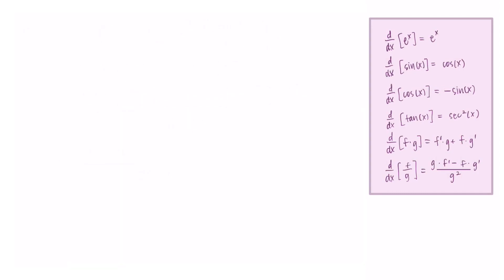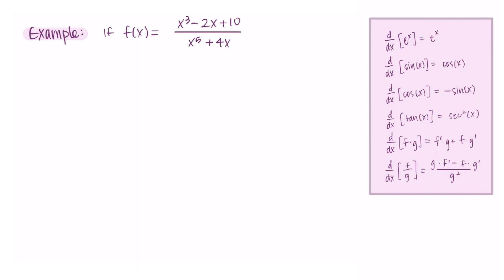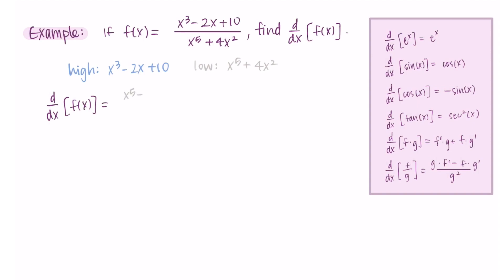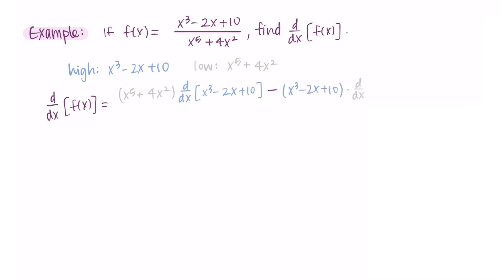I want to do an example that's a little more messy — polynomials in a rational function. Let's say f(x) = (x³ − 2x + 10) / (x⁵ + 4x²), and we want to find the derivative of f. The high function is x³ − 2x + 10 and the low function is x⁵ + 4x². Putting these into the quotient rule formula: low d-high minus high d-low, all over the low function squared.